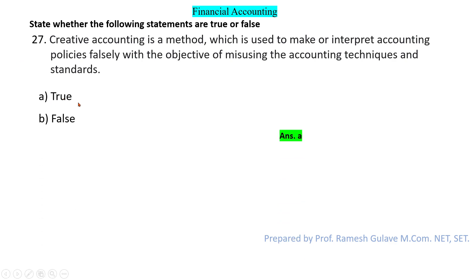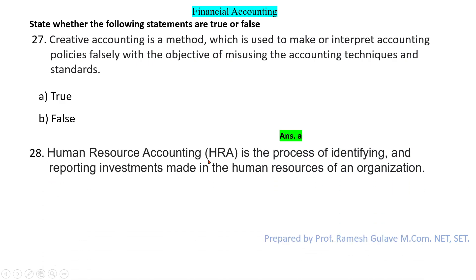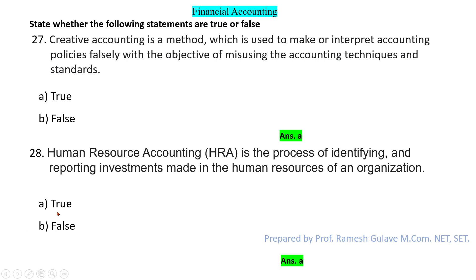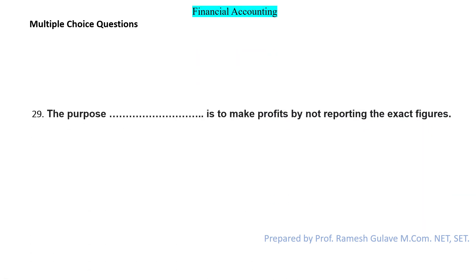Human resource accounting (HRA) is the process of identifying and reporting investments in the human resources of an organization. HRA considers the investment made in human resources, including training, development, and skills-related expenditure. This statement is also true. So here option A — true — is the right answer.